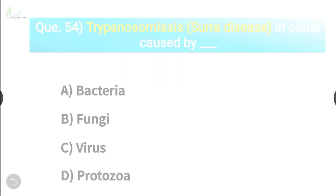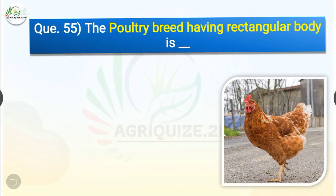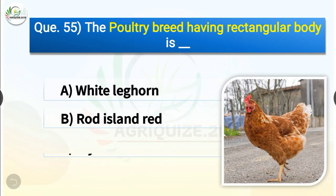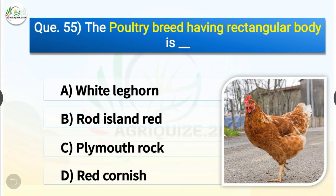Question number 55. The poultry breed having a rectangular body is dash. The options are White Leghorn, Rhode Island Red, Plymouth Rock or Red Cornish. The correct answer is option B, Rhode Island Red. So the poultry breed having a rectangular body is Rhode Island Red.